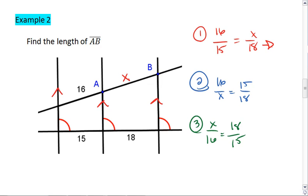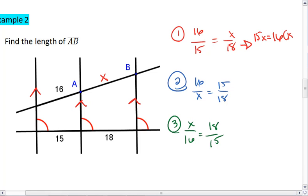What we should find is that 15X, we're going to cross multiply, equals 16 times 18. We can use our calculators to find that 16 times 18 is going to give us 288. So we get 15X equals 288. X will equal 288 divided by 15, which is 19.2. Thus AB equals 19.2.